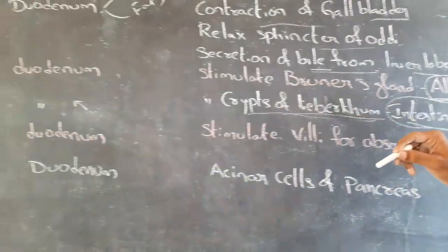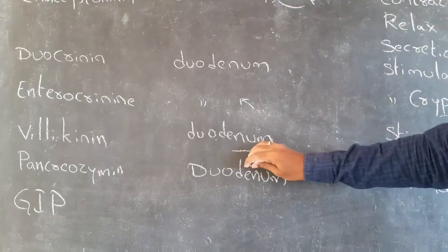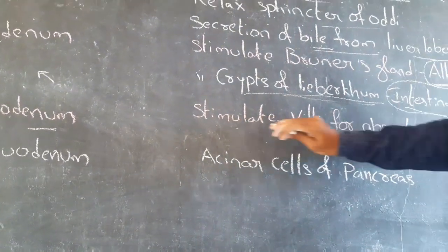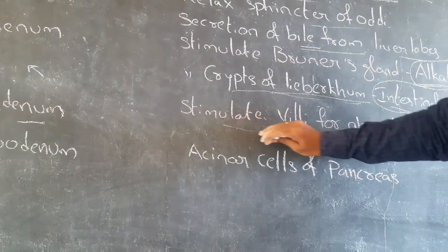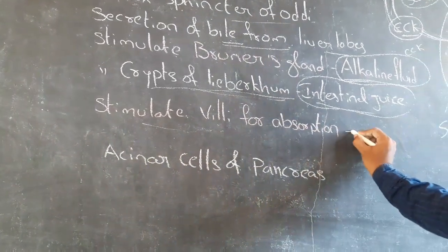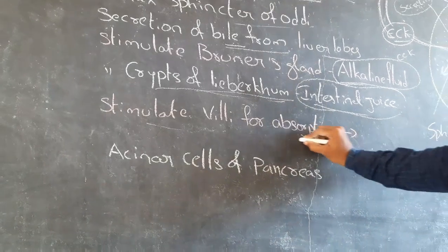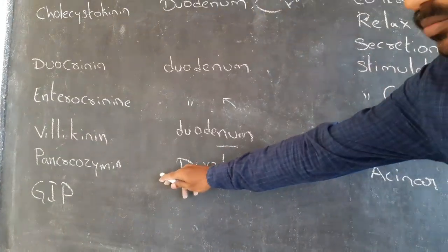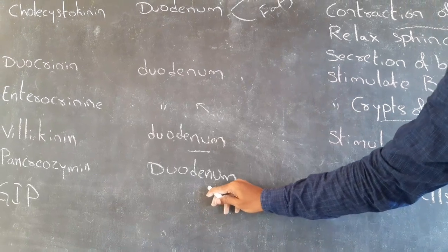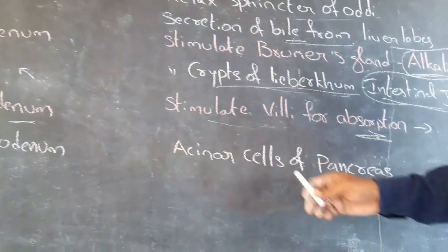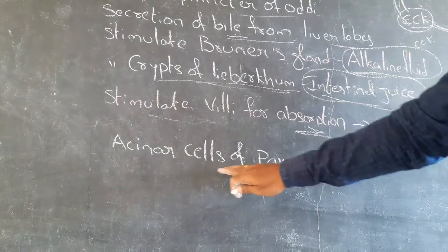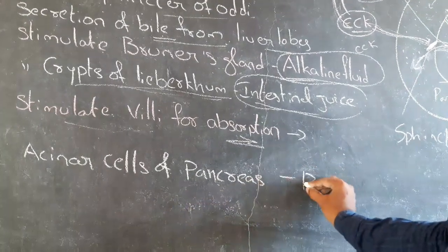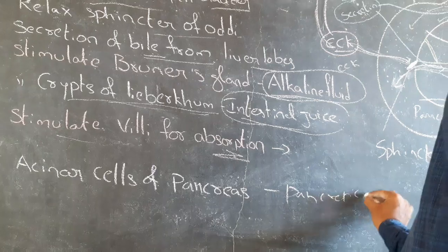Villikinin is secreted from the duodenum and stimulates the villi to increase absorption. Pancreozymin is released from the duodenum and stimulates the acinar cells of the pancreas to secrete pancreatic juice.